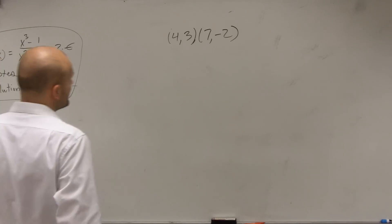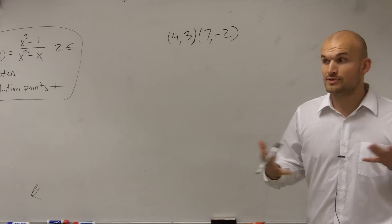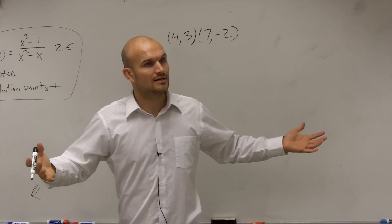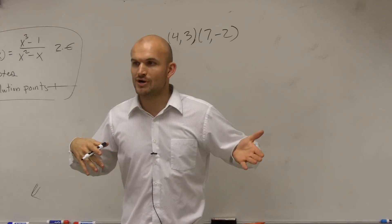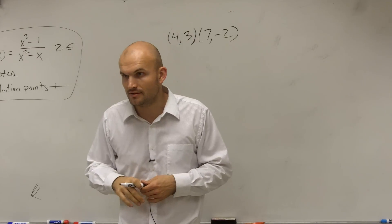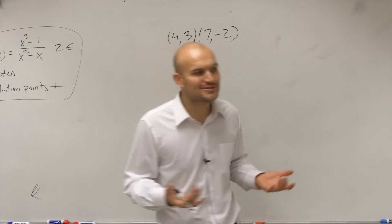All right, so for this problem, if you guys remember, what we previously did was we looked at a graph. We took a look at the graph and said, between these two points it's easy. What you can do is just create a sloped triangle and find the change in the y's over the change in the x's.